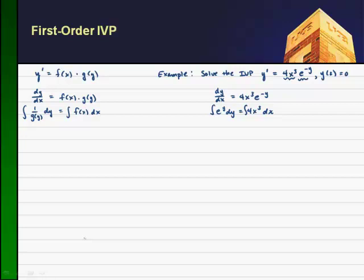And if I integrate on the left-hand side, the integral of E to the Y with respect to Y is just E to the Y. And here I have 4 times the integral of X to the 3rd, which is X to the 4th over 4. And 4 over 4 cancel, so I'll get X to the 4th plus some arbitrary constant.